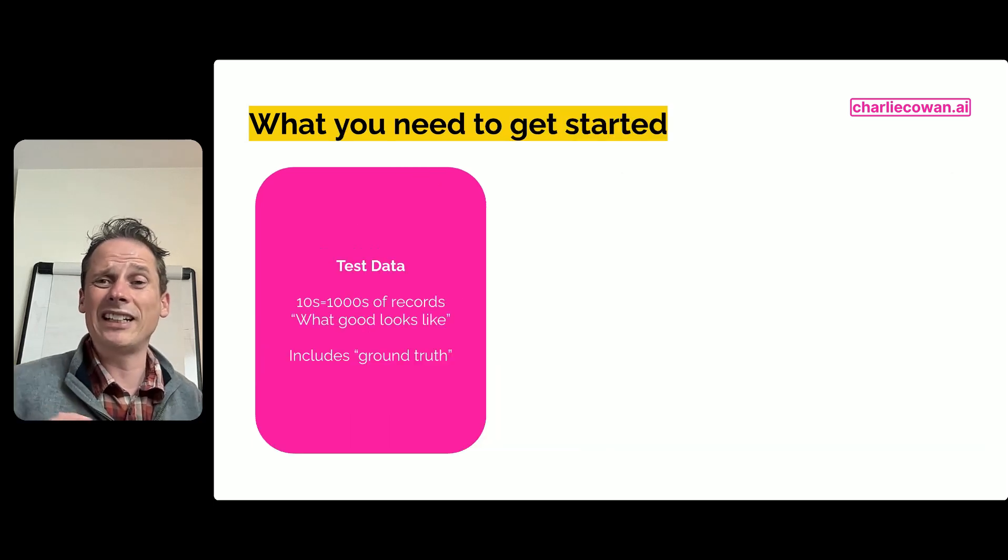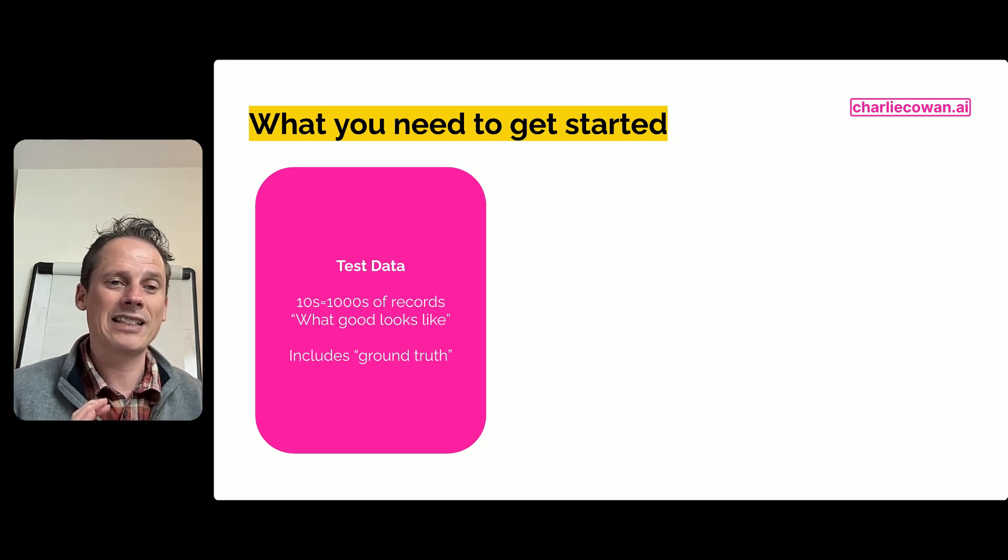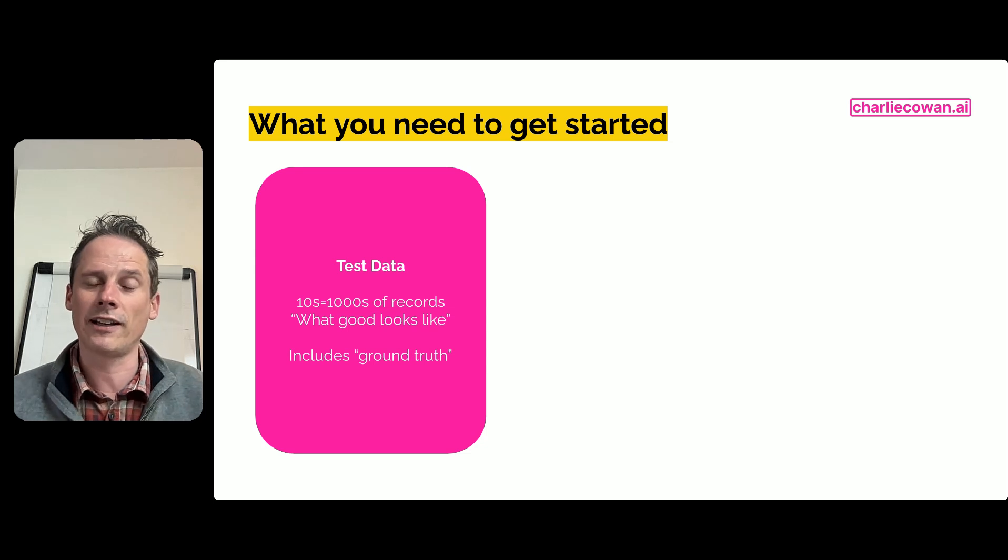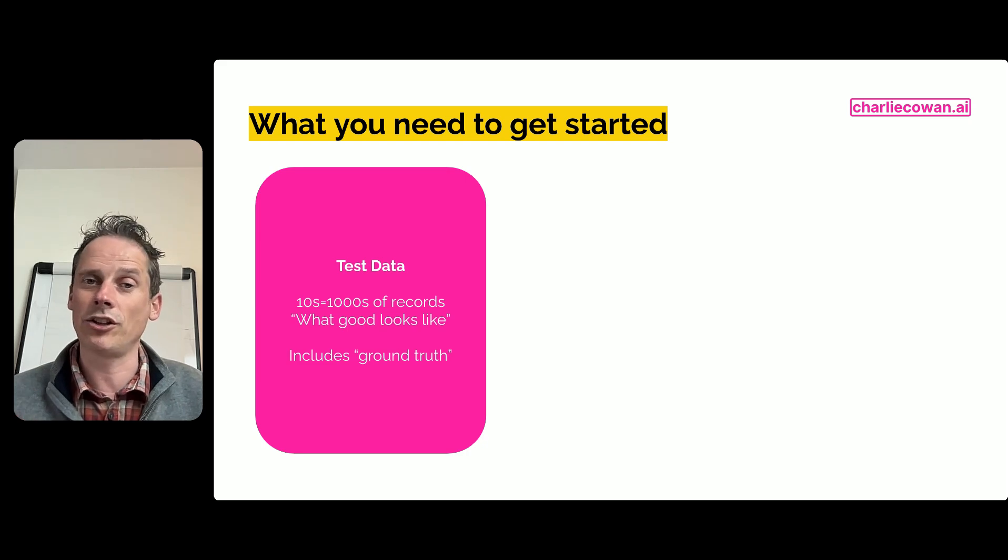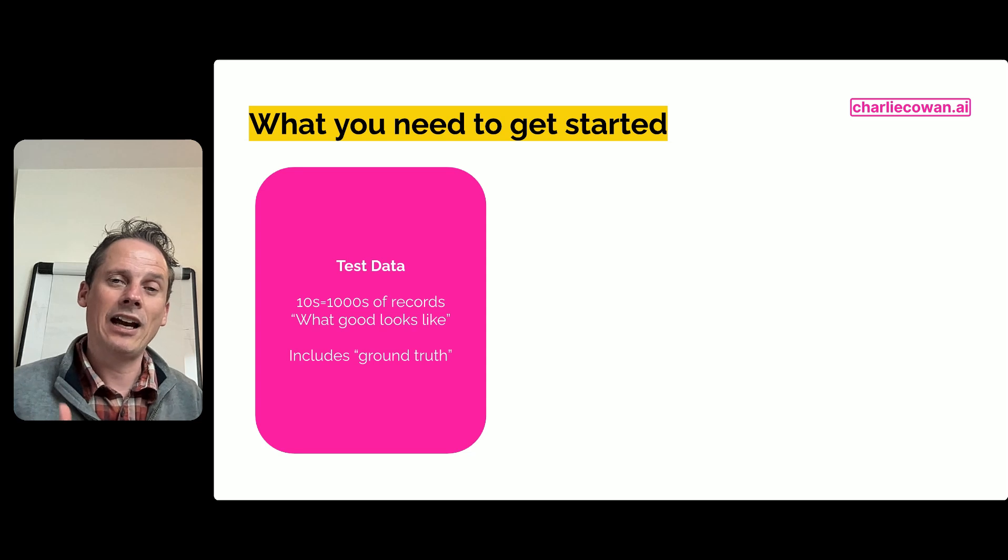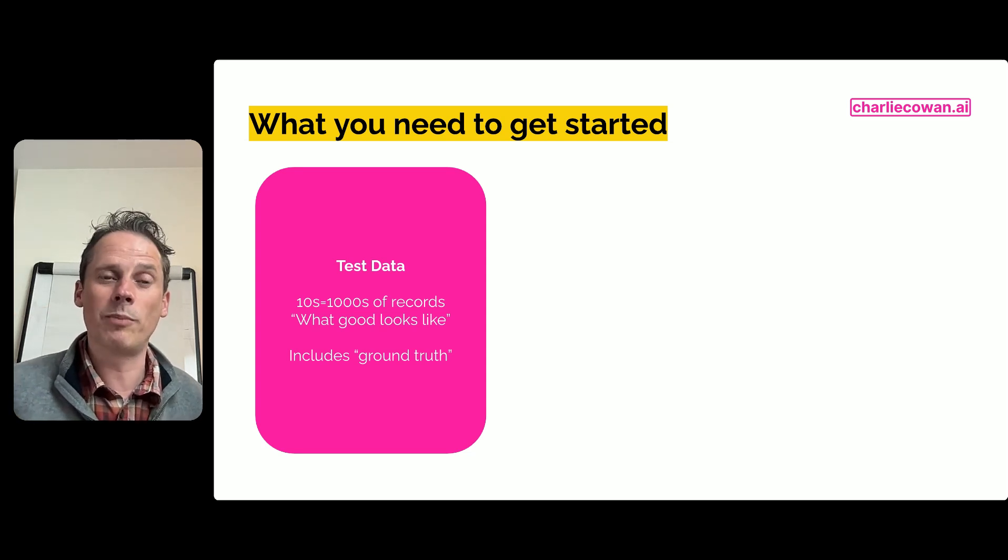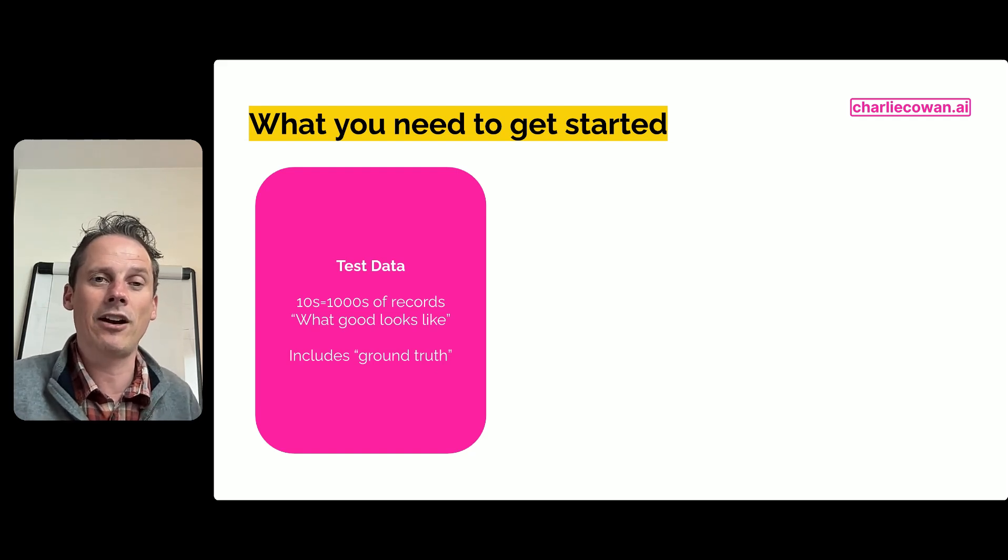So there's three things that you really need to get started with an eval. The first is a test data set. So we're thinking of having tens or thousands of records of what good looks like. If we are, for example, going to be categorizing support tickets into a set of buckets, we want to have as many test records as possible with what we call the ground truth. With these thousand support tickets, this is what the actual answer as derived by the humans would be that we can test the AI prompt against.